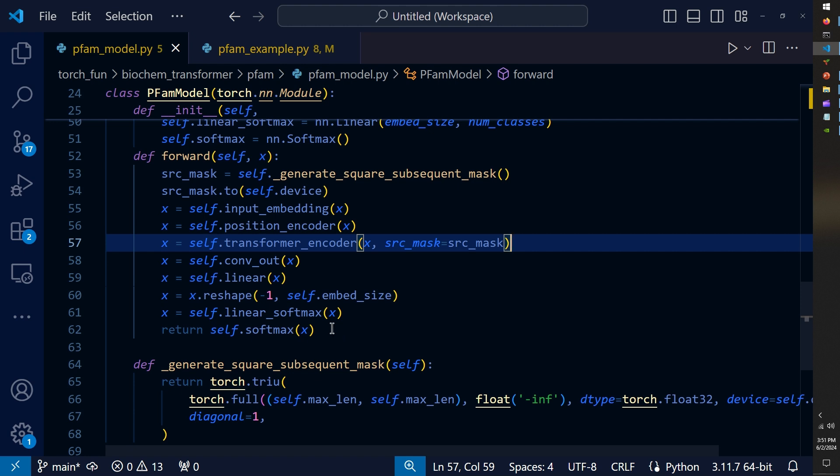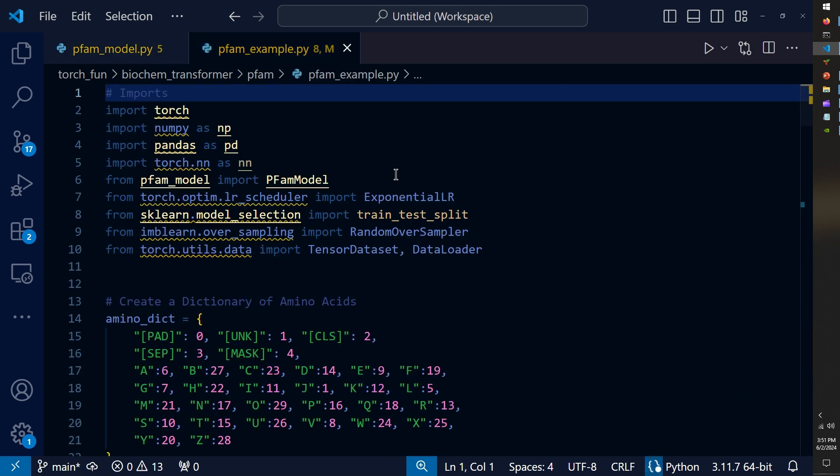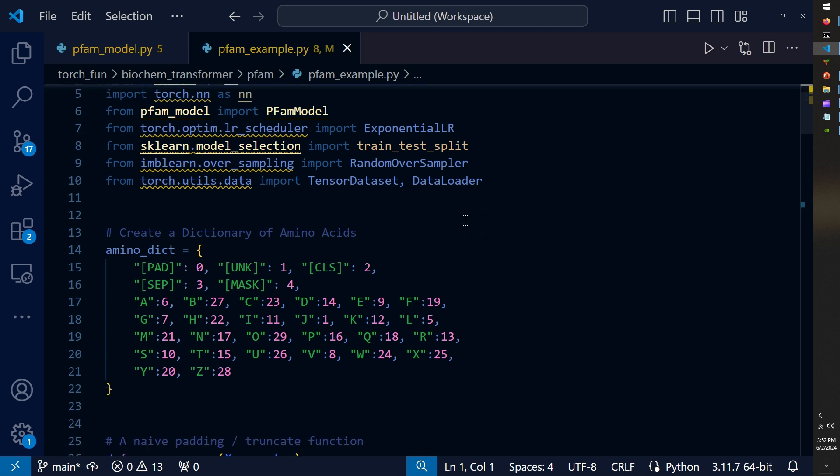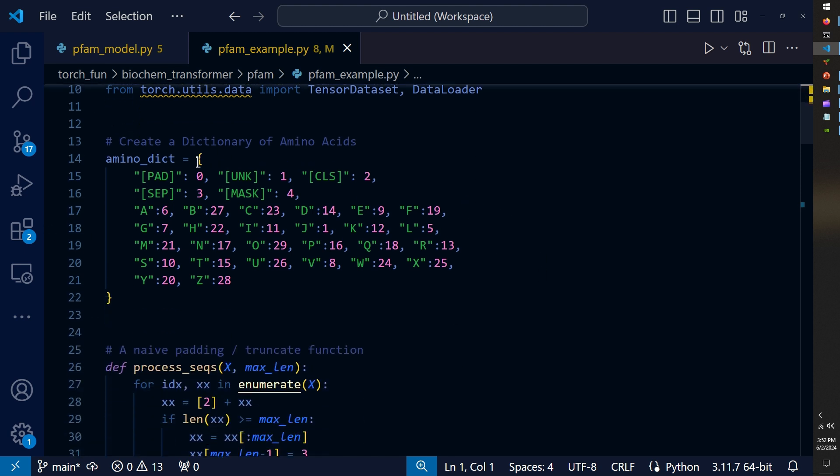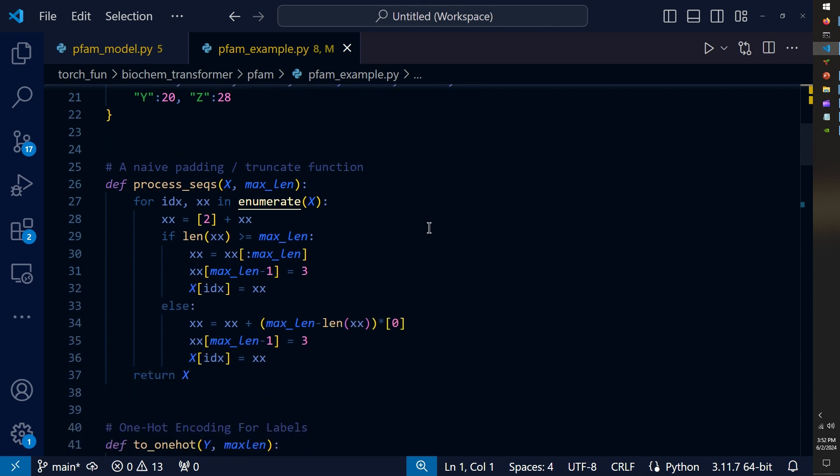How this is called from the script file: there's a variety of data preprocessing that I included at the beginning of our script. After our imports, I defined a dictionary that houses those appropriate tokens for tokenization of the amino acid sequences. Then I defined a naive function to pad sequences that are not of length 512 and to truncate sequences longer than 512 tokens.